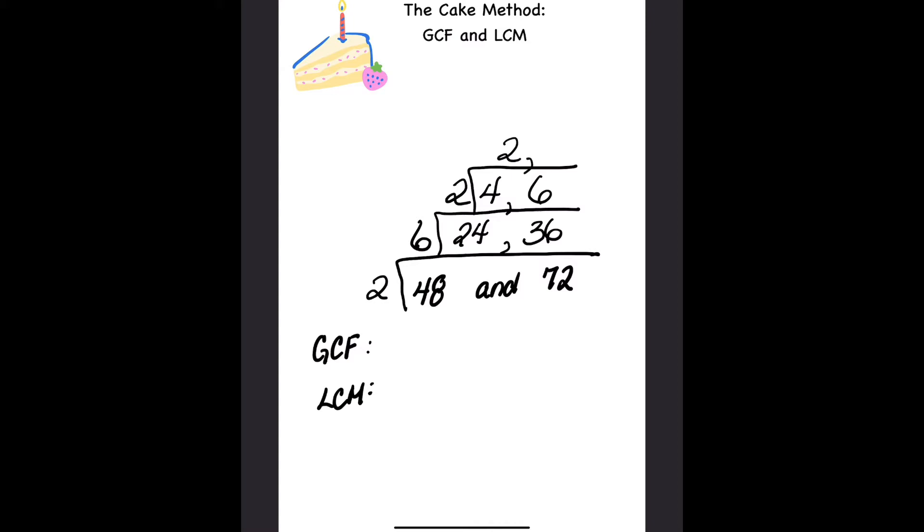Now when I get to this part, the only number I can divide by would be one, so I would end up getting the same number. So this is where I know I can stop. Think of them like candles on the top of the cake.